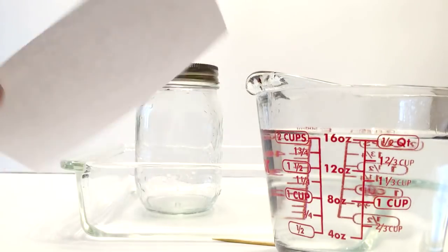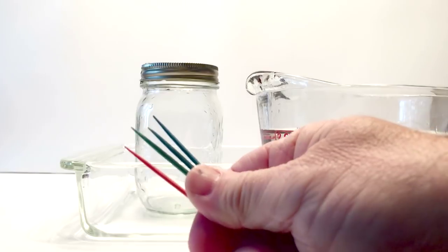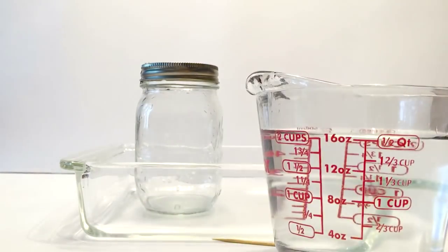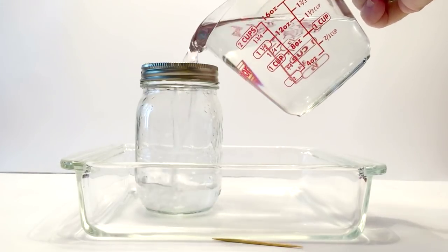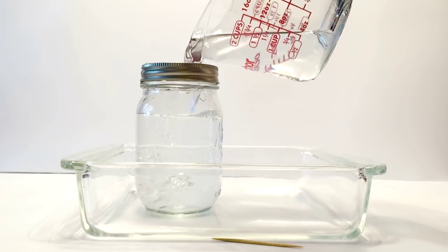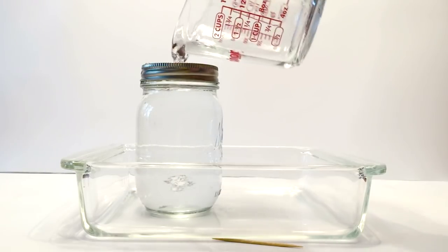We're going to do the experiment first, and then we're going to show you how to do the experiment. So the index card, toothpicks, mason jar, and about two cups of water, depending on how large your mason jar is, you want to fill it all the way to the top, so you might need a little less or a little more water.